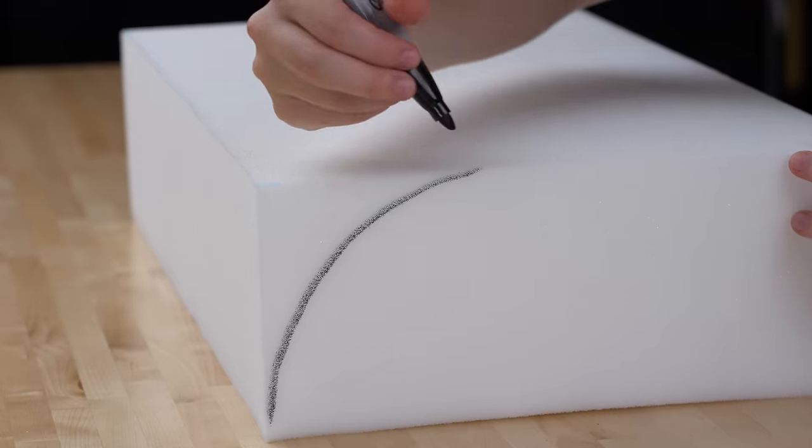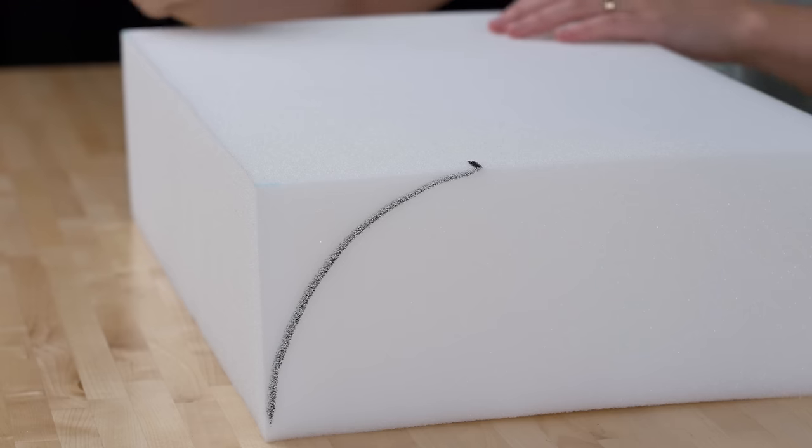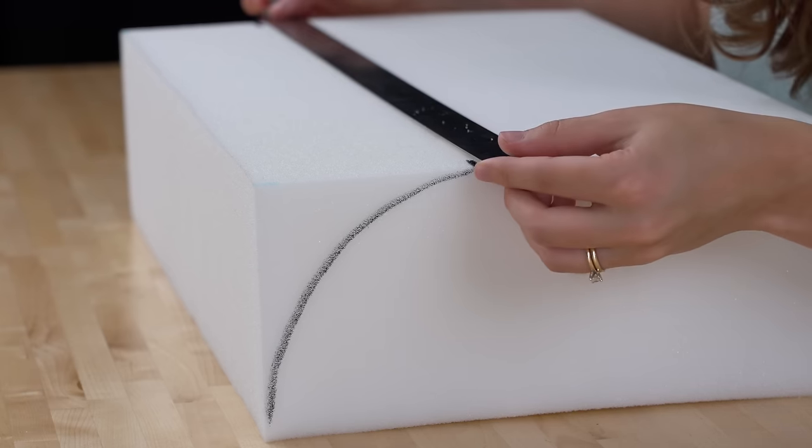Once you've marked your initial reference lines on the side, we're going to carry those lines across the top. So we're going to pull those lines up just like so on either side and then we'll connect them with our ruler.